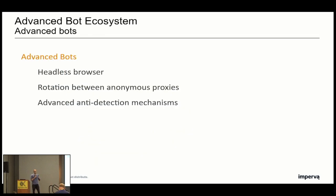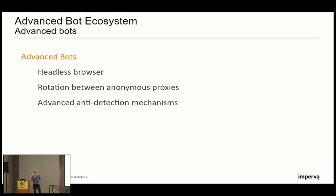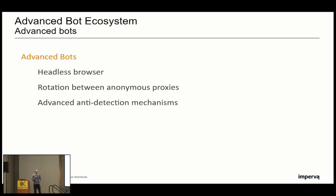So what do we mean exactly by advanced bots? We have a few things in mind. First, we think about headless browsers — a technology that enables the rendering of web content almost the same way a real browser would. For example, Puppeteer or Selenium are able to do that. We think about the rotation between anonymous proxies, most of the time residential ones because they are more difficult to detect. And lastly, we think about advanced anti-detection mechanisms, for example the ability to mimic human behavior during the solving of CAPTCHAs.